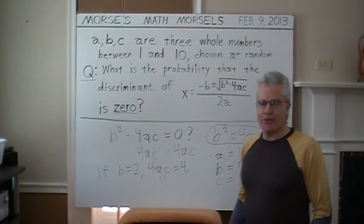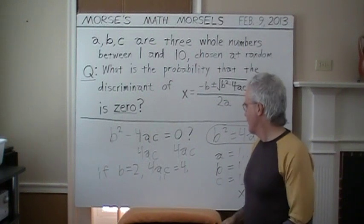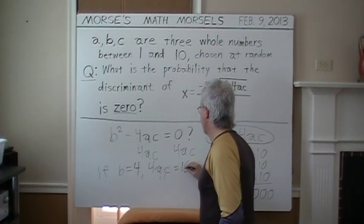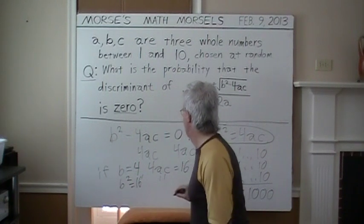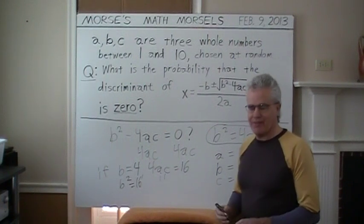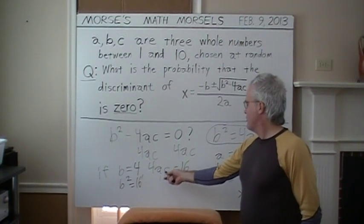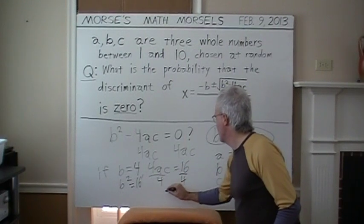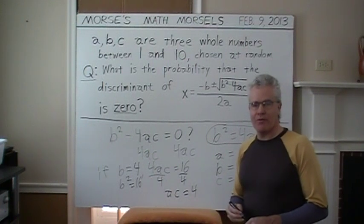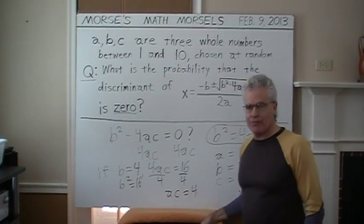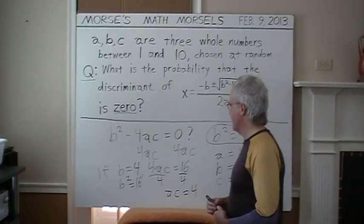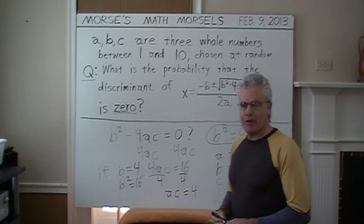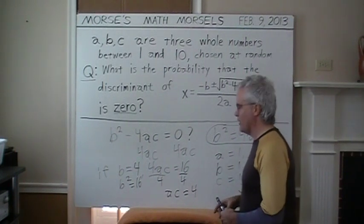Moving on, we've got to skip B equals 3. B cannot be odd. So, let B equal 4. If B equals 4, 4 times A times C must be 16, because B squared equals 16. So, how do we get 4 times A times C equals 16? Well, divide each of these by 4 so that A times C will equal 4. So, what values among those small whole numbers will result in A times C equaling 4? A can equal 1 and C equal 4, or A and C can each equal 2, or A can equal 4 and C can equal 1. So, that's three more possibilities.